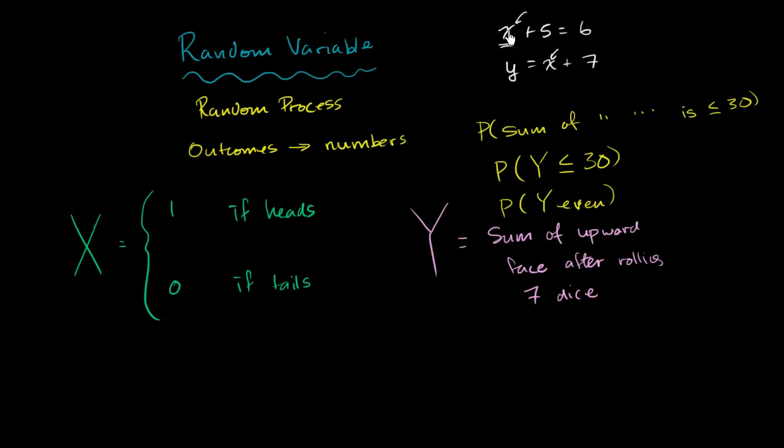That's not going to be the case with a random variable. A random variable can take on many different values with different probabilities. And it makes much more sense to talk about the probability of a random variable equaling a value, or the probability that it is less than or greater than something, or the probability that it has some property.